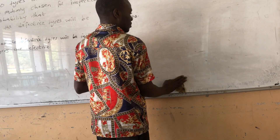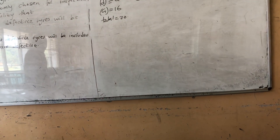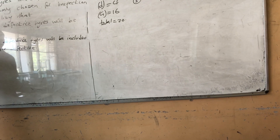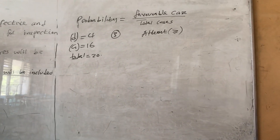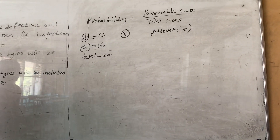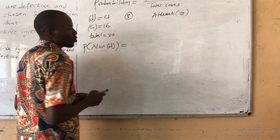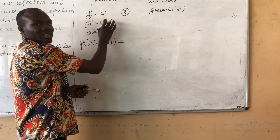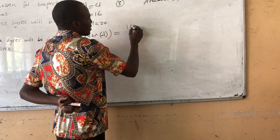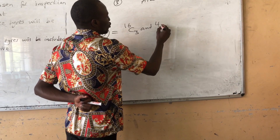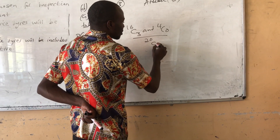For the next question: what is the probability that none of the chosen tires are defective? None defective means all three chosen are good. So we say 16 choose 3 times 4 choose 0, divided by 20 choose 3. All three were gotten from the good section, meaning none are defective.